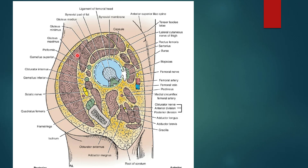Posteriorly and superiorly, the three gluteal muscles are gluteus maximus, gluteus medius, and gluteus minimus. Beneath them are the deep gluteal region muscles: piriformis, gemellus superior, obturator internus, gemellus inferior, and quadratus femoris. The hamstring muscles — biceps femoris, semitendinosus, and semimembranosus — and the sciatic nerve, the nerve of the posterior compartment of thigh, are also present. Medially, the muscles include obturator externus, adductor brevis, adductor longus, and gracilis, supplied by the obturator nerve.